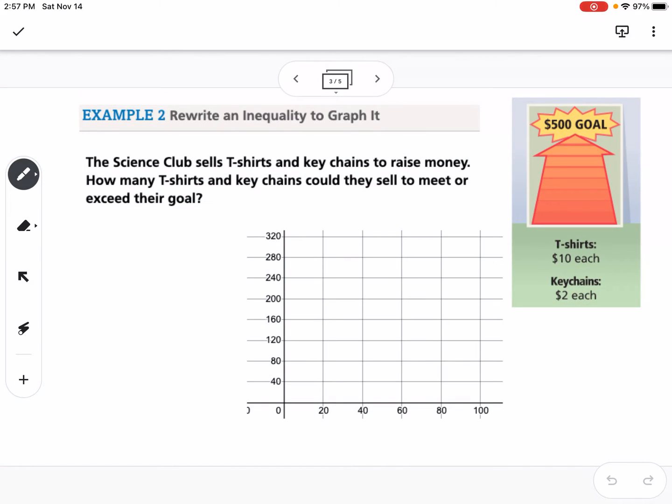Our next example says the science club sells t-shirts and keychains to raise money. How many t-shirts and keychains could they sell to meet or exceed their goal? So it says their goal is $500 and they sell the t-shirts for $10 each and the keychains for $2 each. So I'm going to write an inequality here. So let's make t-shirts x and keychains y. It's always good to define our variables. So I'm going to say 10 times x plus 2 times y and we want that to be greater than or equal to 500.